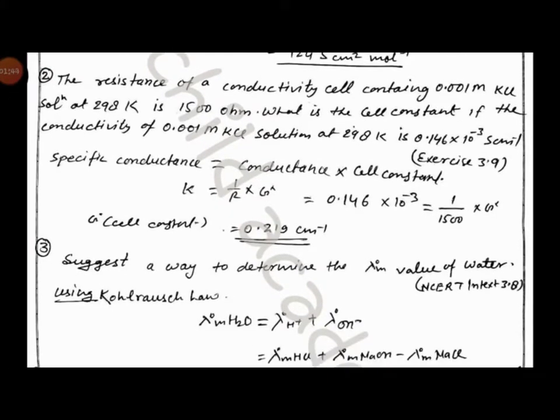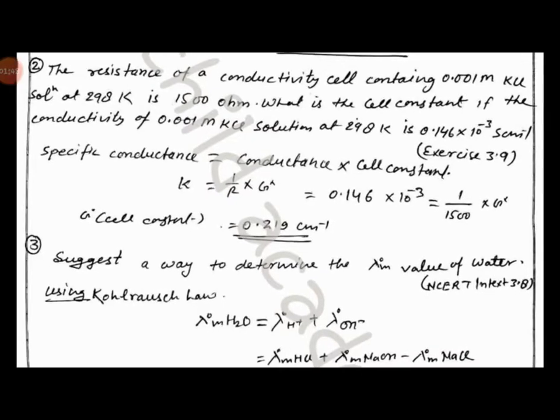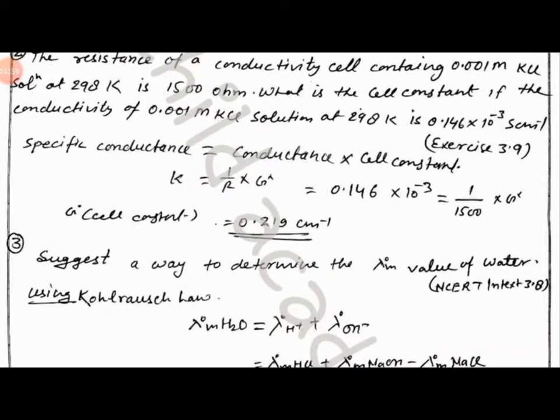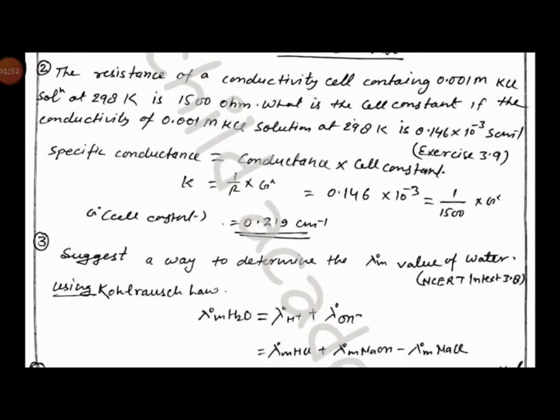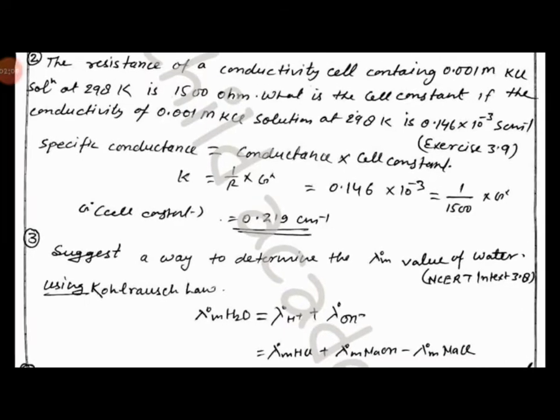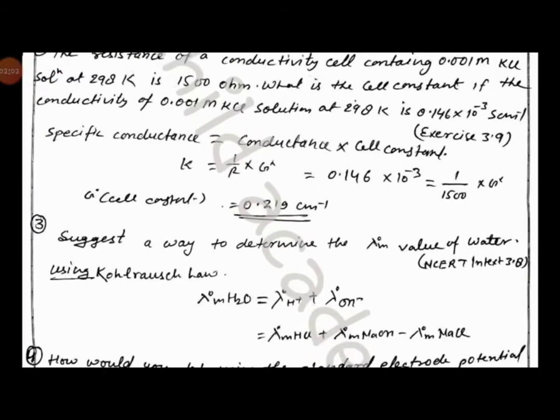Now we know that specific conductance equals conductivity times cell constant. So kappa equals 1 upon R times G. Therefore, 0.146 times 10 to the power minus 3 equals 1 upon 1500 times G.